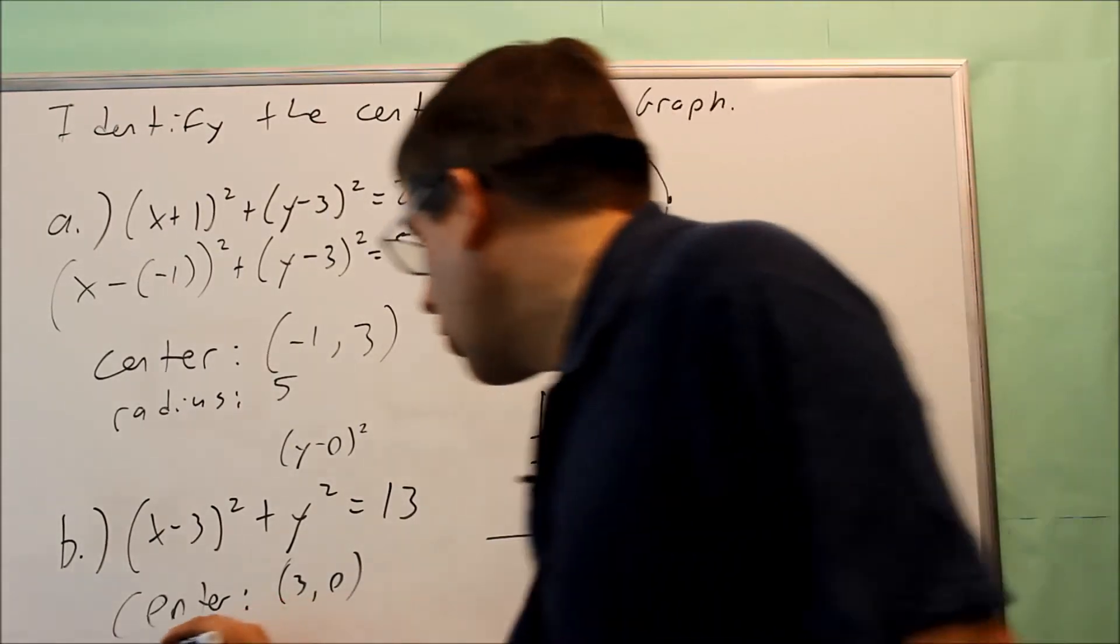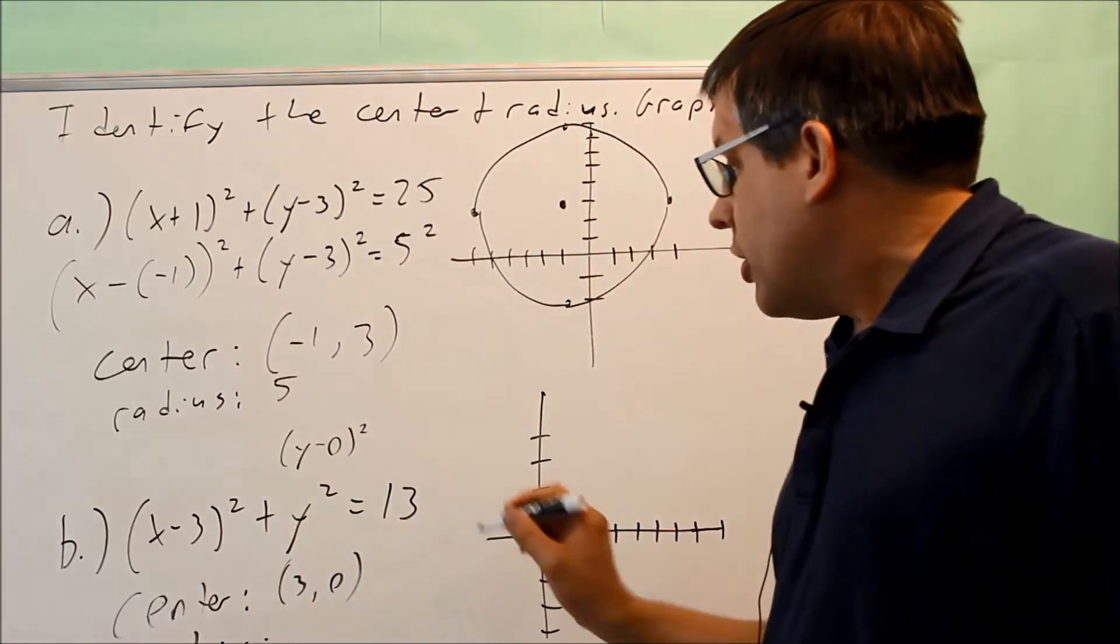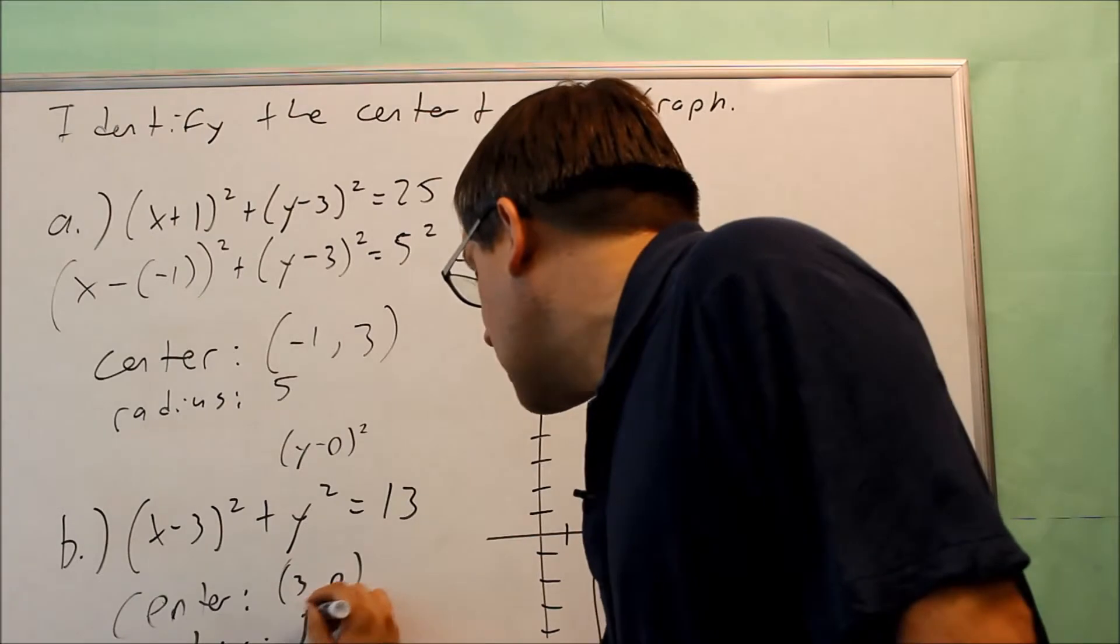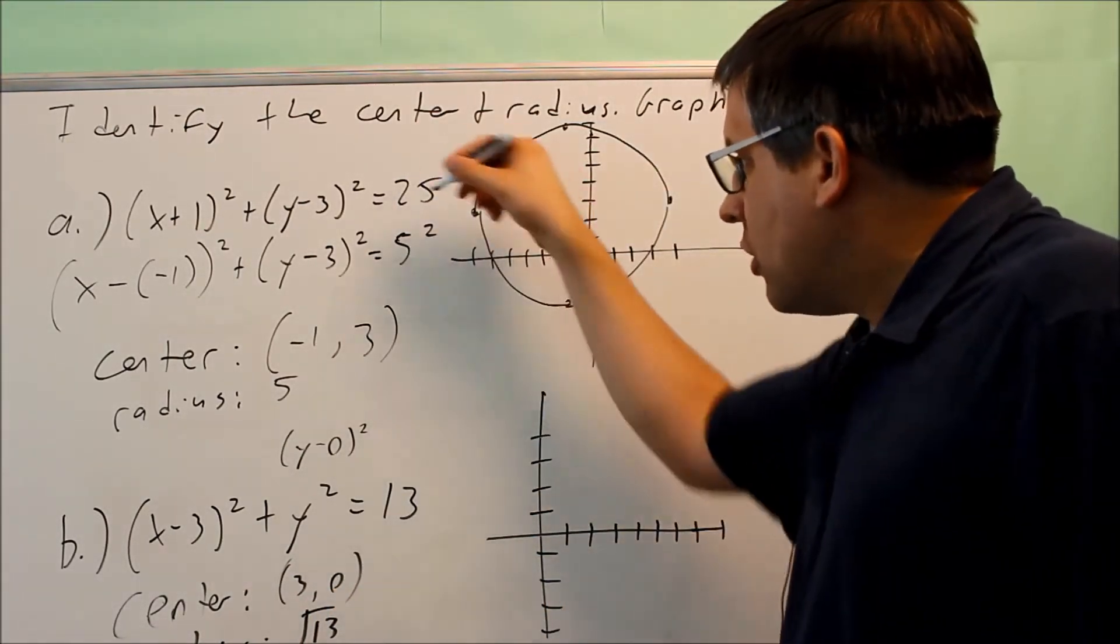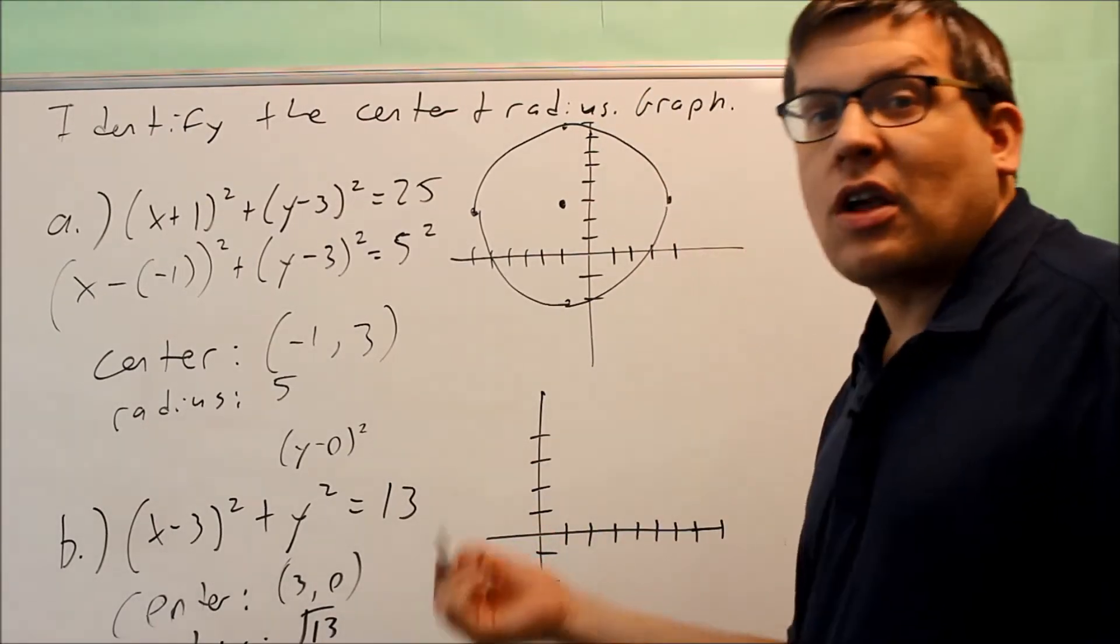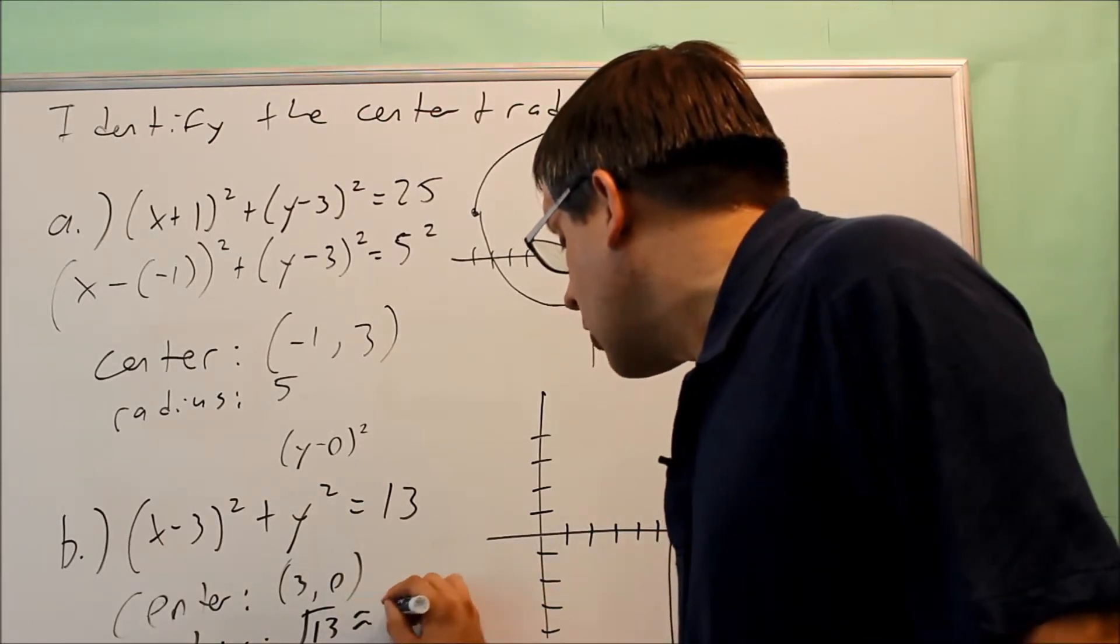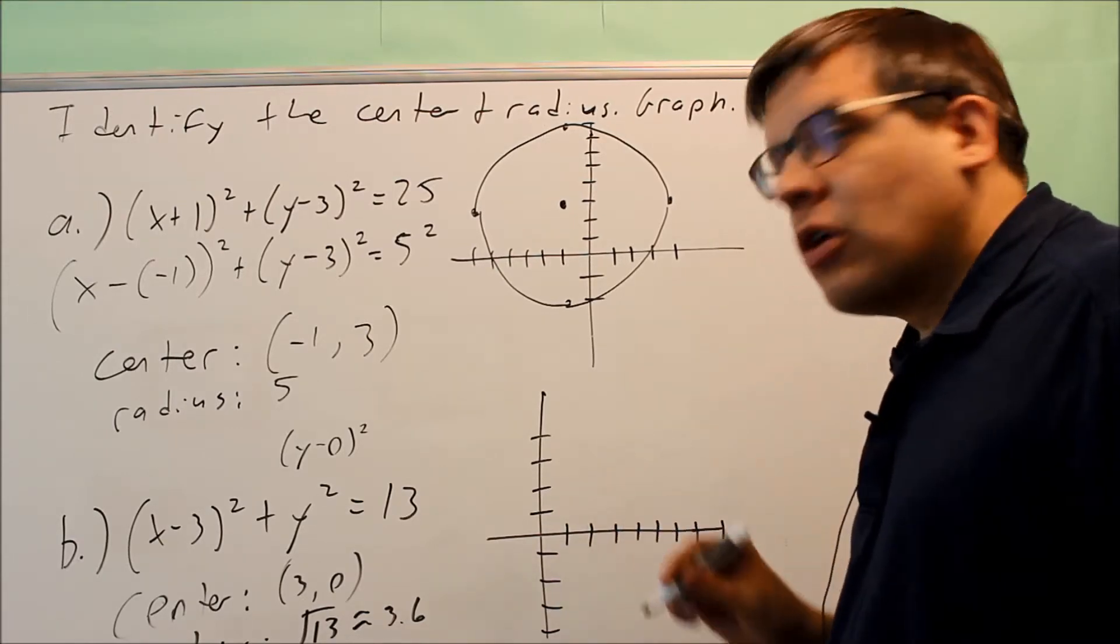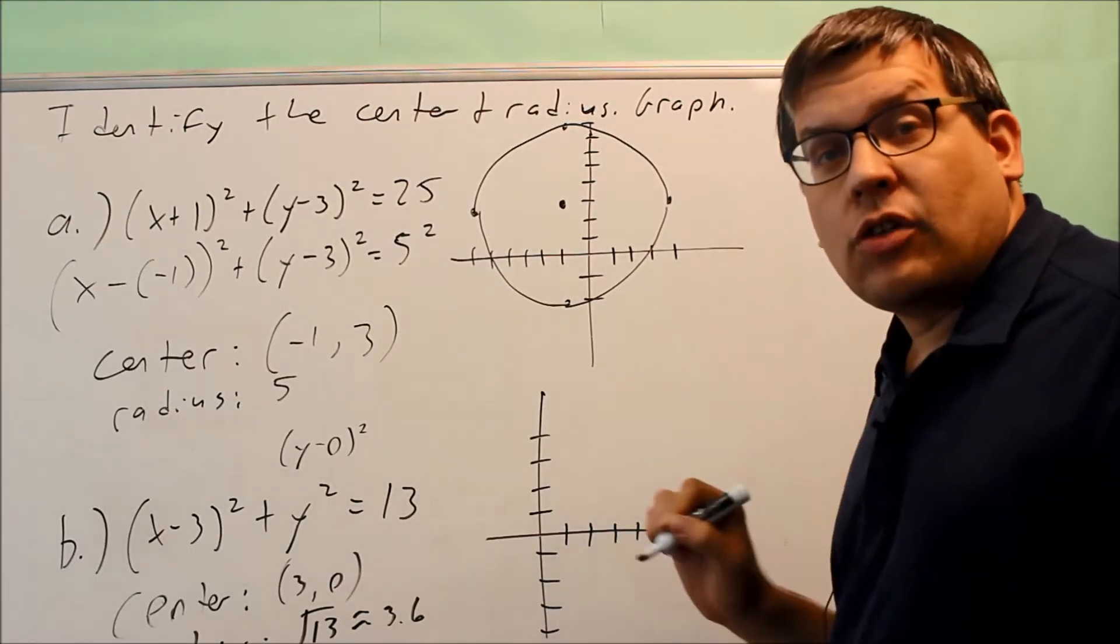For my radius, now you're going to take the square root of that number. This shows you that your radius is not always going to be a perfect integer like we had before. You might actually have a decimal. In this case, the square root of 13 would be the exact answer that you want to put down. However, this is also equal to 3.6. I'm going to change it to 3.6 just for graphing purposes, so I know how big to make these points when I go up, down, left, and right.